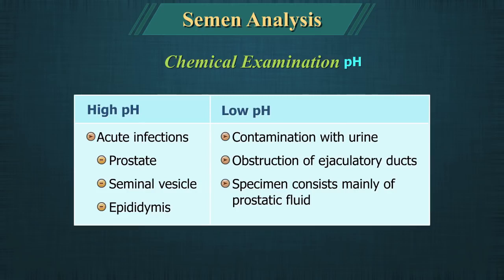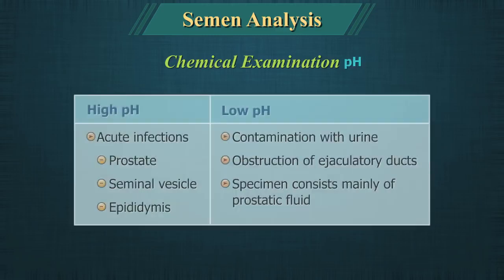High pH values are seen in acute infections of the prostate, seminal vesicle or epididymis. Low pH may be due to contamination with urine, obstruction of the ejaculatory duct, or when the specimen consists mainly of prostatic fluid.